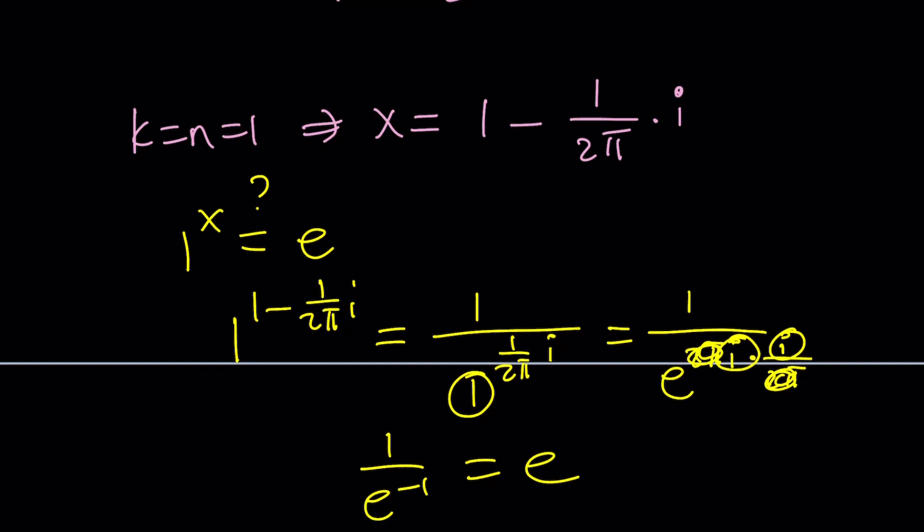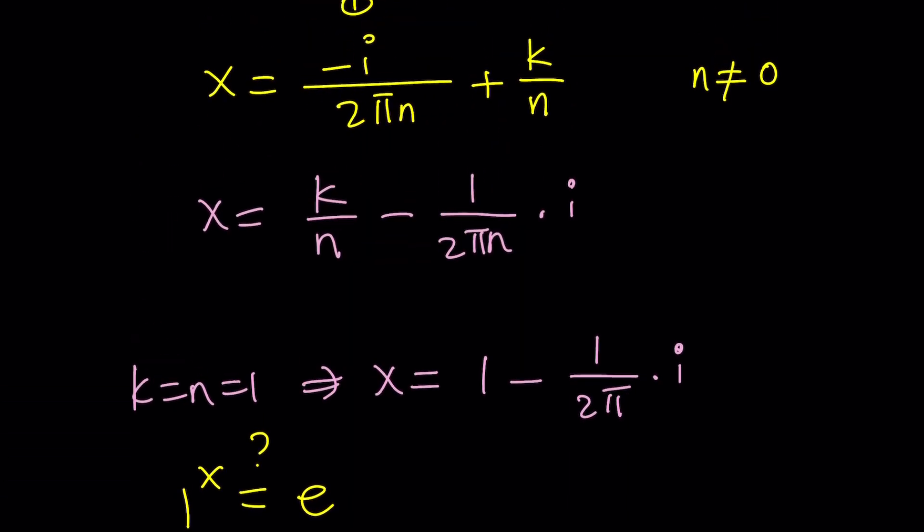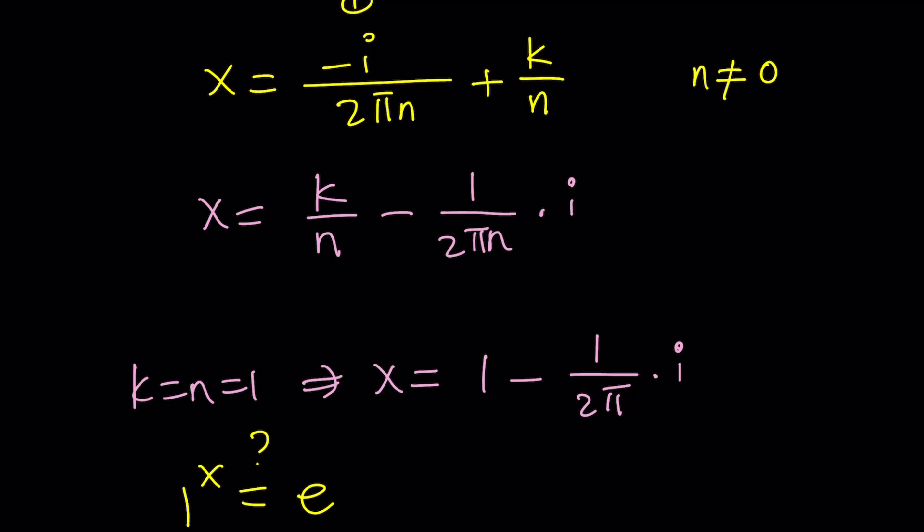But is that going to work in general? That's a good question. If you try other values, here's what the problem is going to be. If you replace x with that, you're going to get 1 to the power k over n divided by 1 to the power negative i over 2 pi n. This part is going to be 1, as long as n does not equal 0, because n is the power of 1. But here's the problem. Whenever you write something like 1 to the power 2 thirds, this is a little problematic because it has multiple values in the complex world. But guess what? One of them is going to be 1 all the time, so we can take it as our principal value.